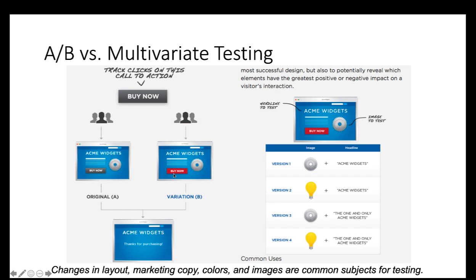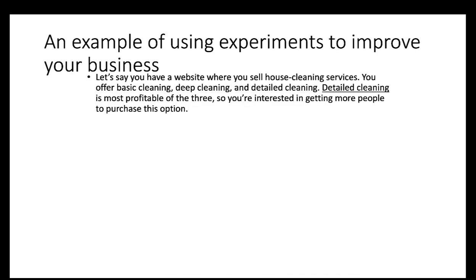Comparing A/B versus multivariate testing: A/B only tests one new variant at a time — for example, testing a new red color for a 'Buy Now' button. In multivariate testing, we test more than one element at the same time — for instance, testing both the headline wording ('ACME Widgets' versus 'The One and Only ACME Widgets') and the icon image (light bulb versus gear). Changes in layout, marketing copy, colors, and images are very commonly tested.